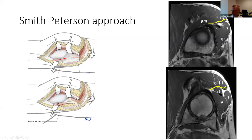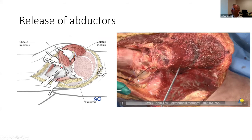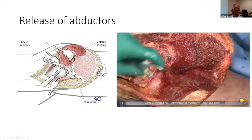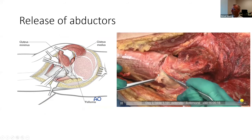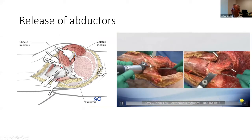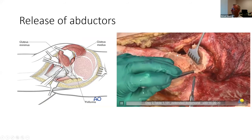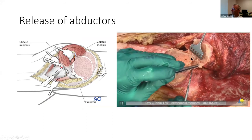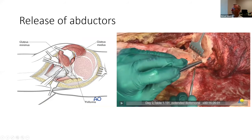As you incise your way down, you'll see that the abductors are elevated. We've identified and saved the stump of the minimus and released it. In this circumstance, instead of releasing the tendon, many times I'll perform a trochanteric osteotomy and release this more posteriorly. For me this is a little bit easier and quicker rather than a tenotomy of the medius tendon.